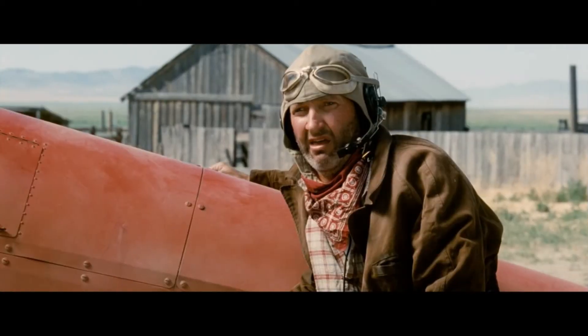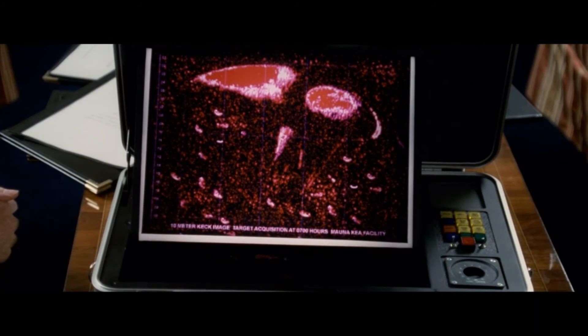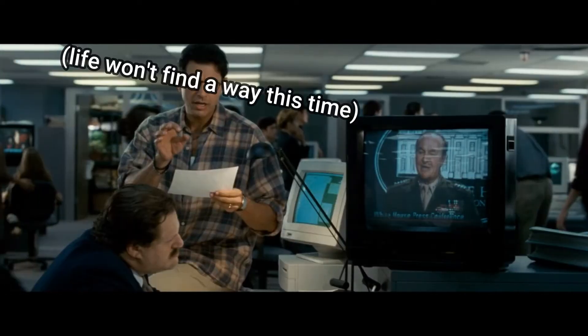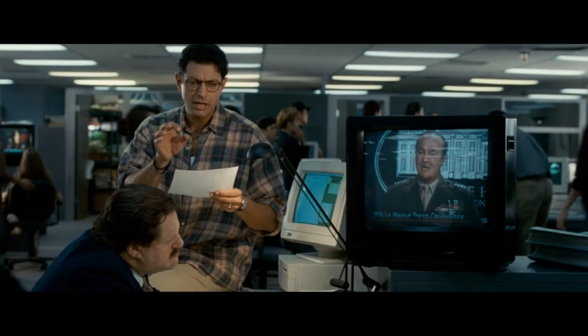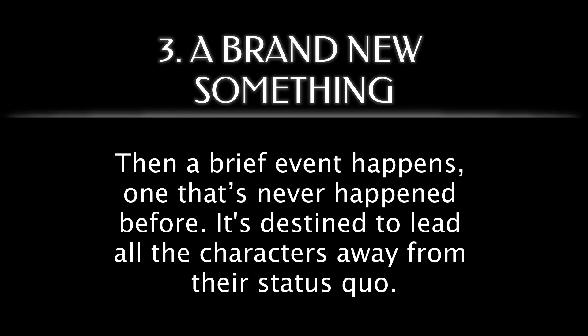Next, we examine where, why, and how our protagonist exists in their world, with a focus on why they don't quite fit in. Earth faces a scenario it is not prepared for. Whitmore refuses to run and add to the chaos, while David discovers a countdown hidden from everyone, and Russell endures ridicule about an alien experience.